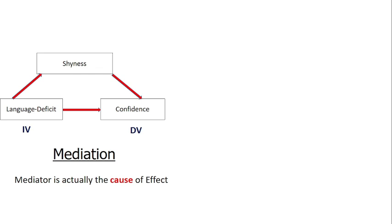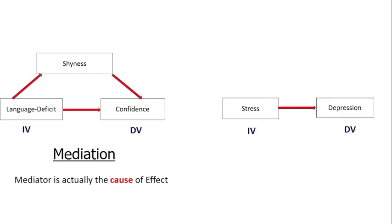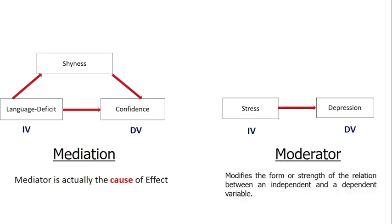So the mediator is actually the cause of the effect. On the other hand, there are two variables in the next example: the independent variable is stress and the dependent variable is depression — that is, depression is being caused by the stress.